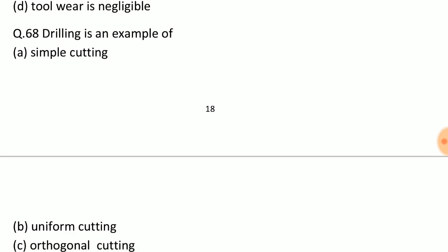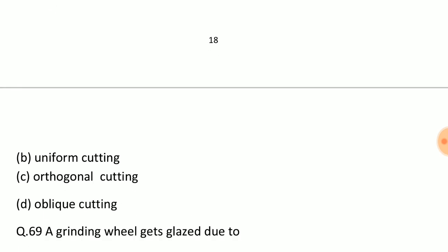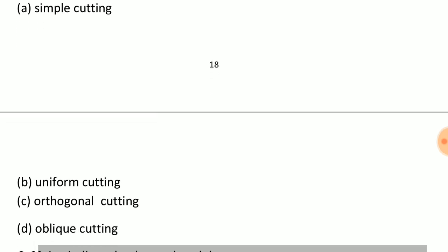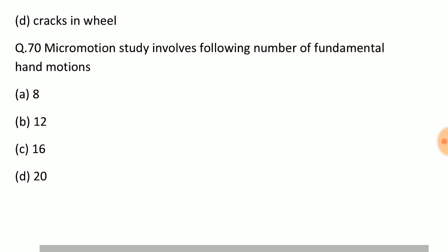Question: Drilling is an example of? Answer: Option D, oblique cutting. Question: A grinding wheel gets glazed due to? Answer: Option A, wear of abrasive grains. Question: Micromotion study involves following number of fundamental hand motions? Answer: Option C, 17.